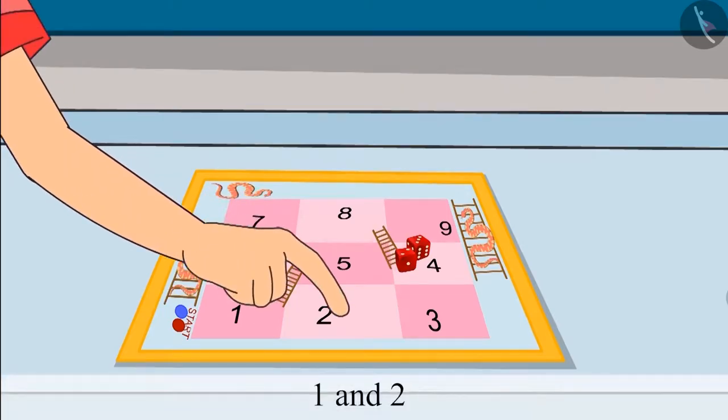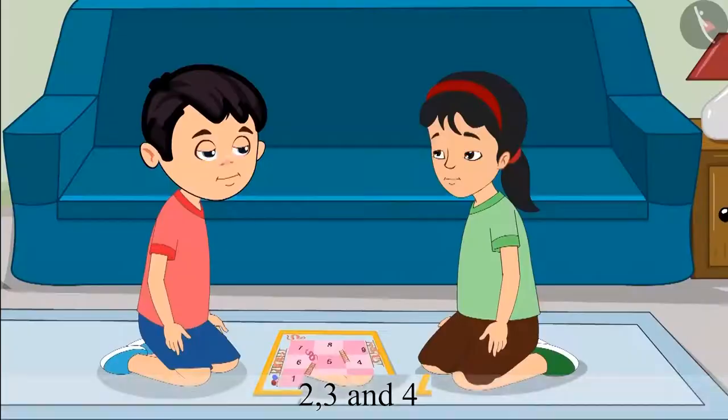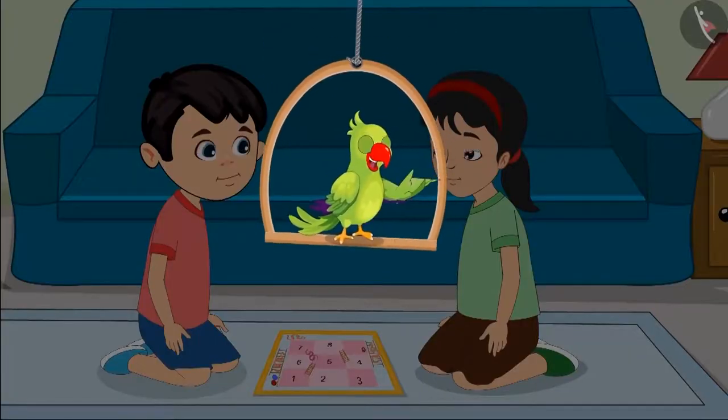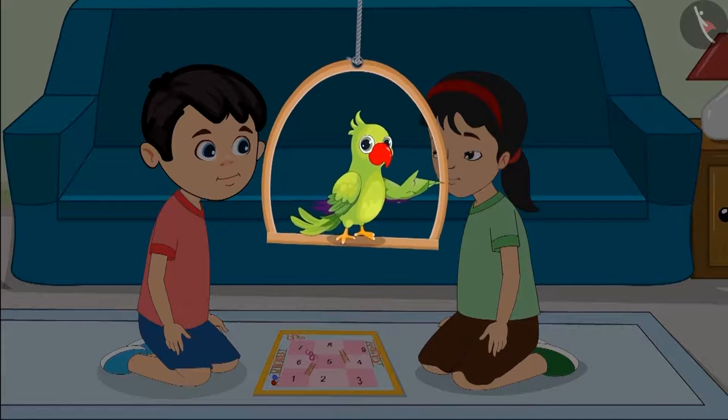1 and 2. That's the number on the first dice. 2, 3 and 4. Do you think Chotu's method to add the numbers is correct? Come on. Let us look at this carefully.